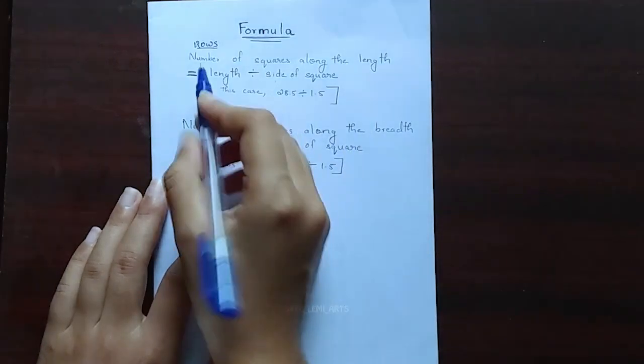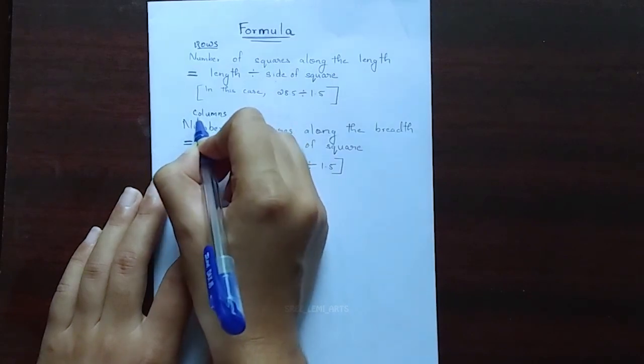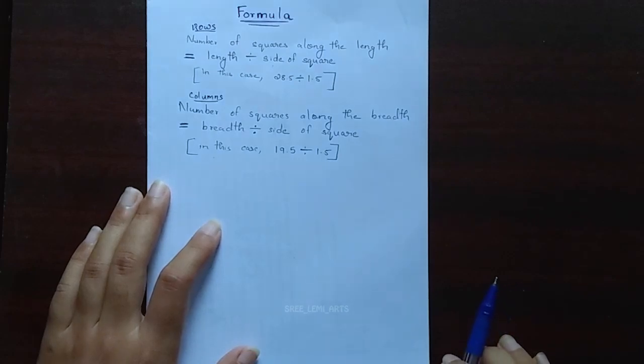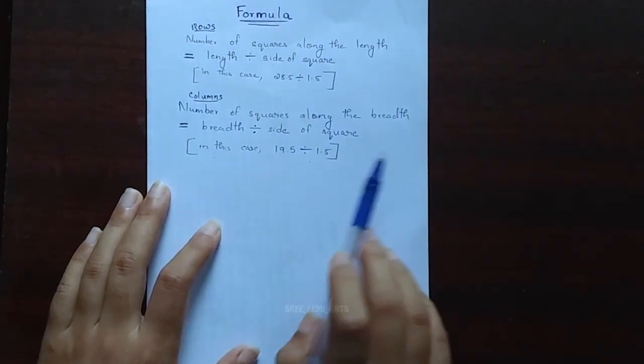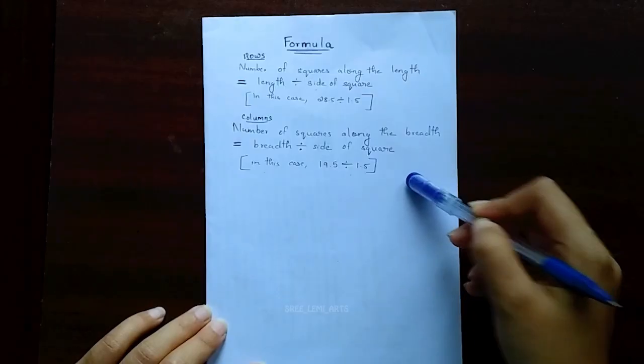And to find the number of squares along the breadth, that is to find the number of columns, you have to do is breadth divided by side of the square. Here we have in this case 19.5 divided by 1.5, that is 13 centimeters. Reference whenever you feel confused.